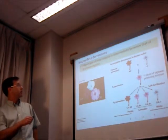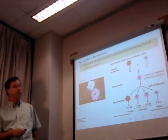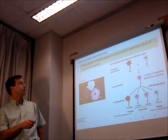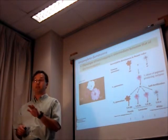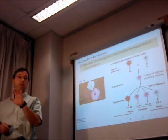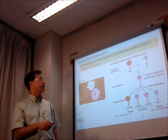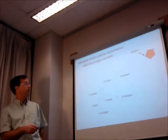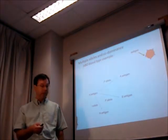This example of the four o'clocks is a perfect example of the principle that we call incomplete dominance, in which the phenotype of the heterozygote is actually intermediate between the phenotype of the two homozygotes. So this is the first of our extensions of Mendel for single genes.